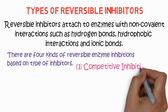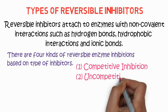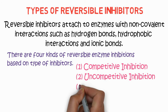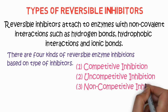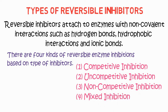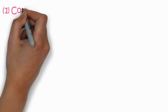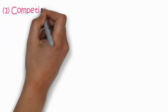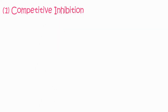There are four kinds of reversible enzyme inhibitors, based on the type of inhibition. The first is competitive inhibition, the second is uncompetitive inhibition, the third is non-competitive inhibition, and the fourth is called mixed inhibition.